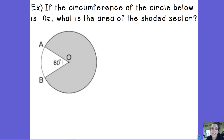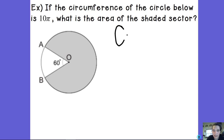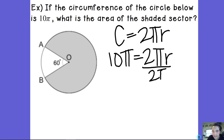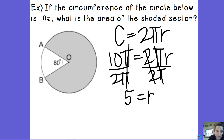Let's look at this example: if the circumference of the circle is 10π, what's the area of the shaded sector? I don't know the radius, but the circumference is given. Circumference equals 2πr, so 10π = 2πr. I divide both sides by 2π — the π's cancel — and 10 divided by 2 is 5. So our radius is 5.